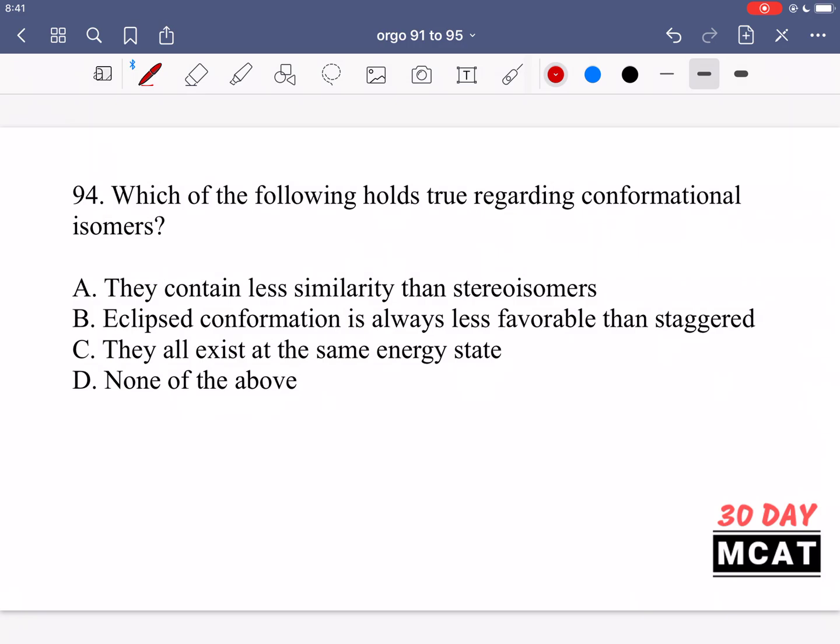In question 94, we're asked which of the following holds true regarding conformational isomers? Conformational isomers means we're talking about one molecule and the different orientations it can exist in. For example, looking down one bond, it can be in anti-staggered or gauche conformation. Option A says they contain less similarity than stereoisomers. That's false.